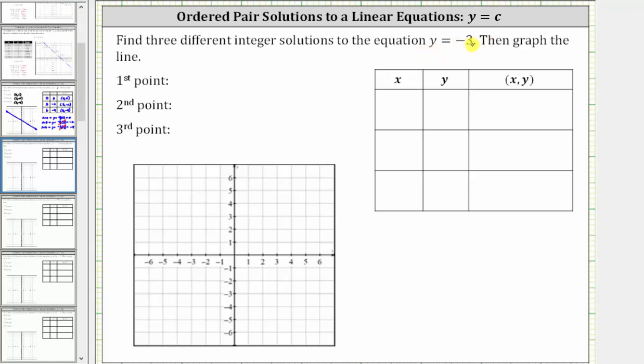Let's organize the information in the provided table. In order for the equation to be true, notice how y must equal negative three. Let's record negative three for y three times.